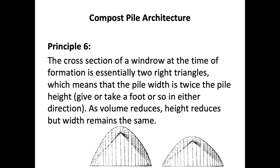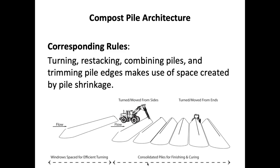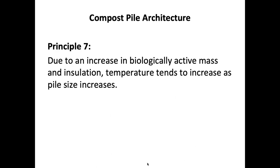In general, the width of a pile is about twice the height. Regarding the shrink factor, you can only account for it in your sizing equation if you're actually moving and consolidating material — a windrow might shrink by 30% but it's still going to be on the same footprint; it's not going to shrink horizontally. So it really requires turning, stacking, and combining piles to take advantage of that shrink factor.